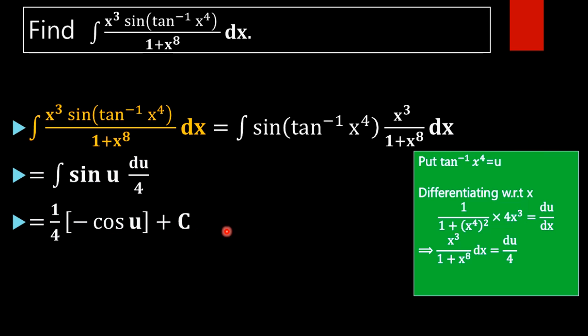So what is the value of our integral? That is 1 by 4 into minus cos u plus c, where u is tan inverse of x raised to 4. Now providing that value, we will get minus cos of tan inverse of x raised to 4 whole divided by 4 plus c. This is the value of the integral.